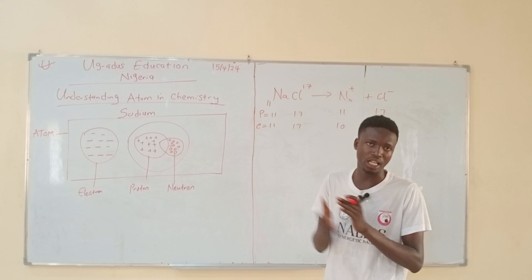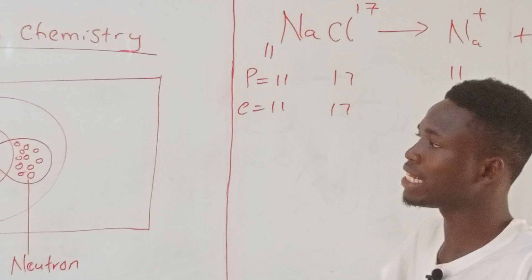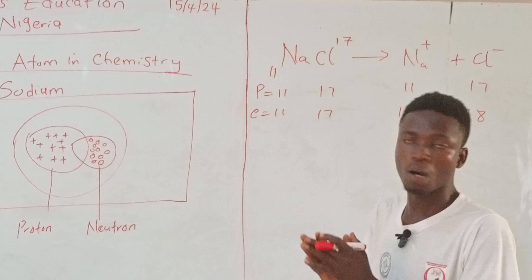As you can see, let's take for instance that this rectangular box is representing sodium atom. We know that an atom is spherical, so don't mind me using a rectangle. Let's use this rectangle so you can get what I'm saying.